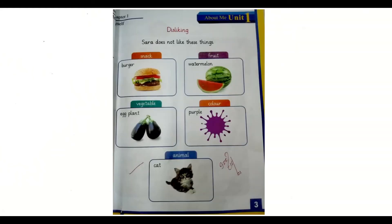Now look at page number three. Disliking - Sara does not like these things. In snacks, she doesn't like burger. In fruits, she doesn't like watermelon. In vegetables, she doesn't like eggplant. In color, she doesn't like purple color, and in animals, she doesn't like cat.